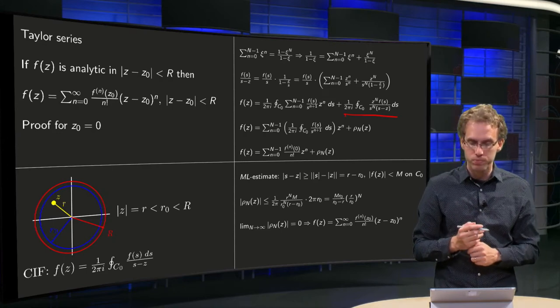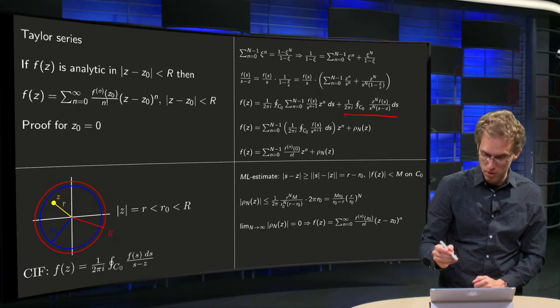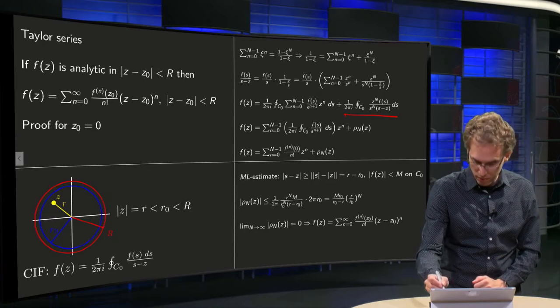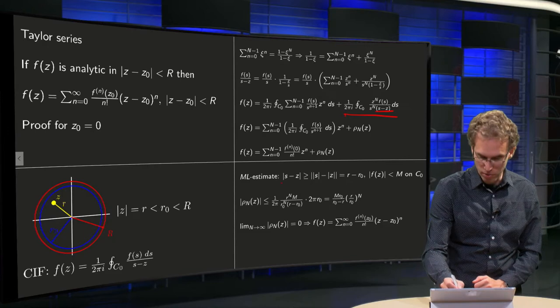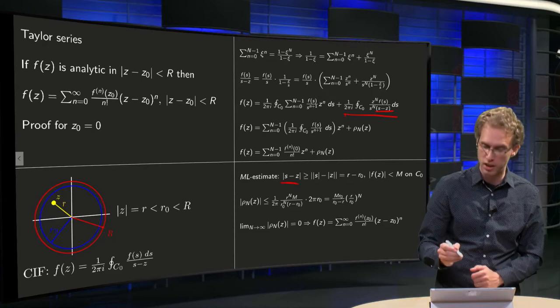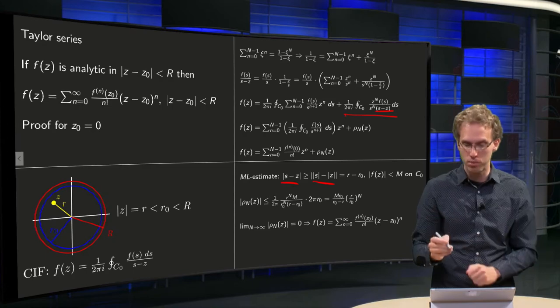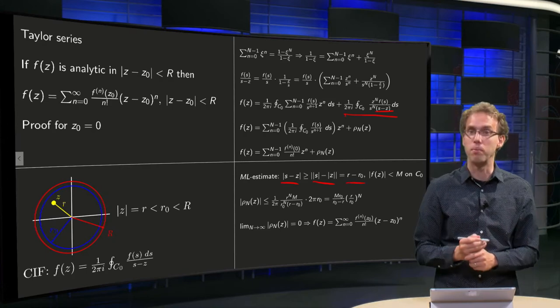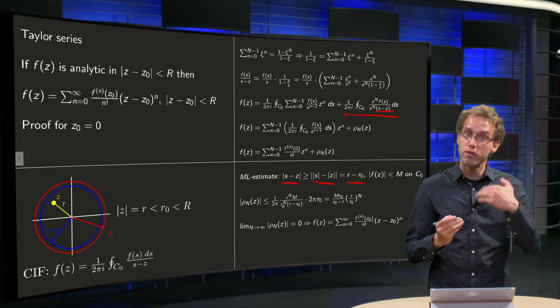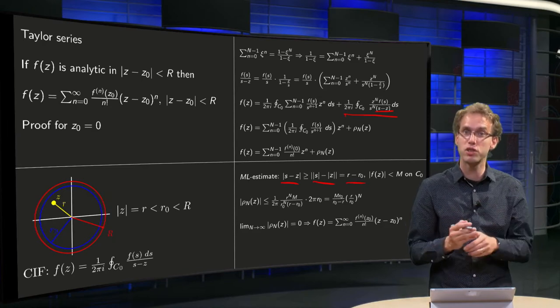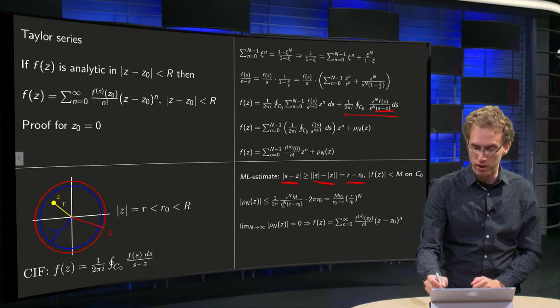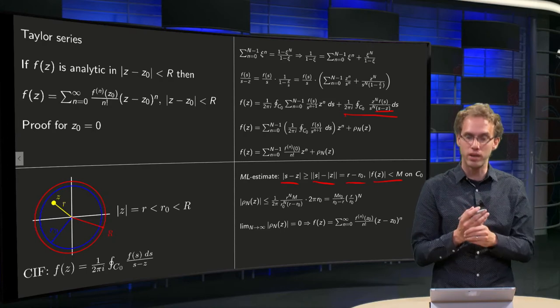Well, first of all we know that we have to estimate this one. Norm of s minus z by triangle inequality is greater than or equal to norm of s minus norm of z equals r₀ minus r. Furthermore, we have an analytical function which is bounded, so we know that f of s is smaller than some capital M on c₀.